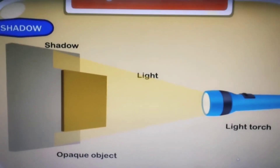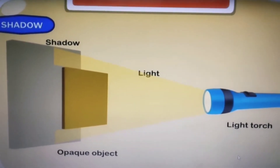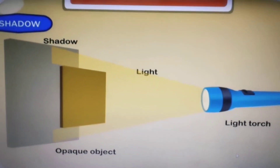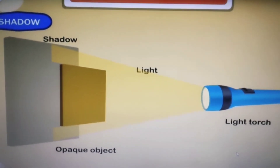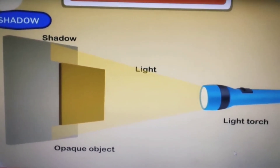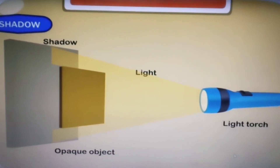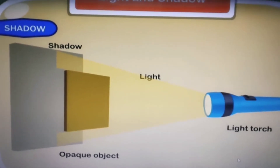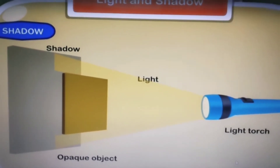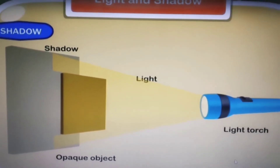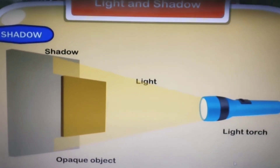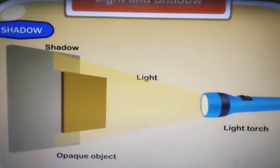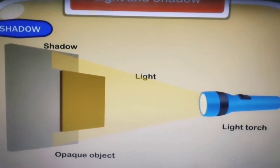You have seen many times that a shadow is always of black color. Whatever is the color of the object, the shadow will always be black. So I hope now you are able to understand how shadows are formed.